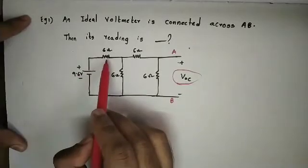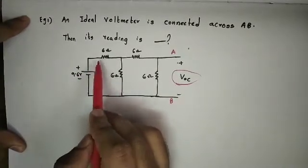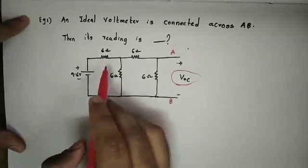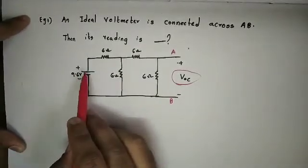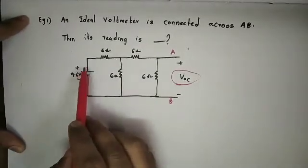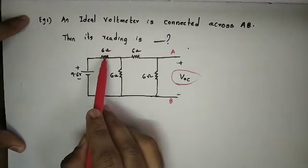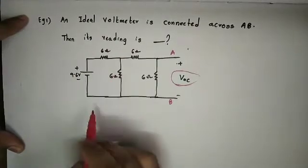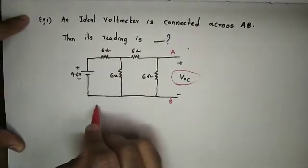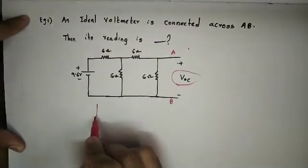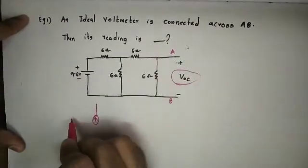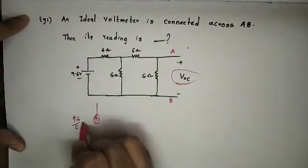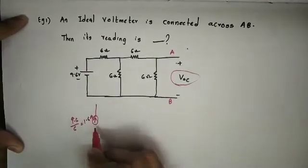The voltage source has a series resistance. Now we will apply source transformation. Converting the voltage source to a current source: voltage divided by resistance. This resistance is then placed in parallel. For example, 9.6 divided by 6 gives 1.6 amps.